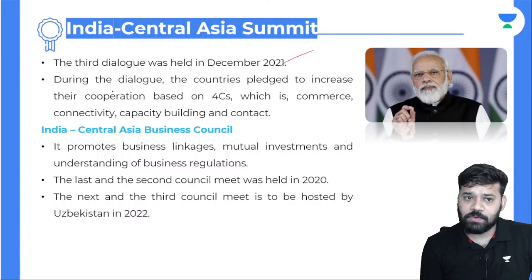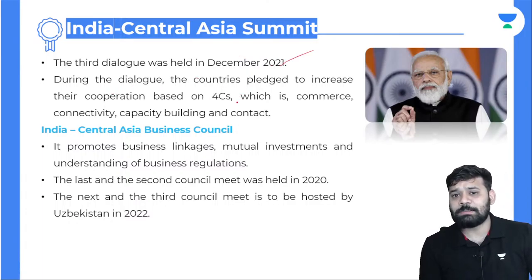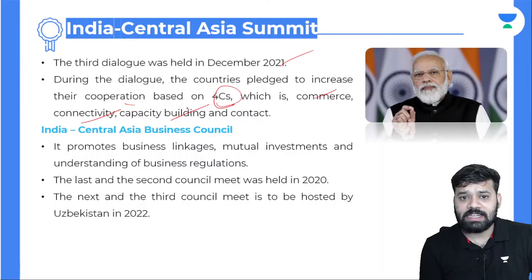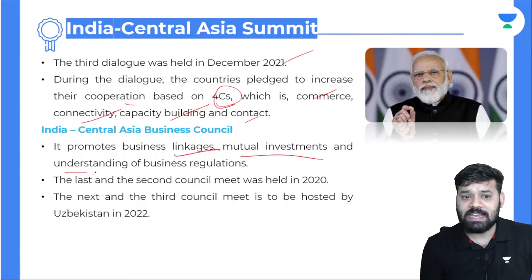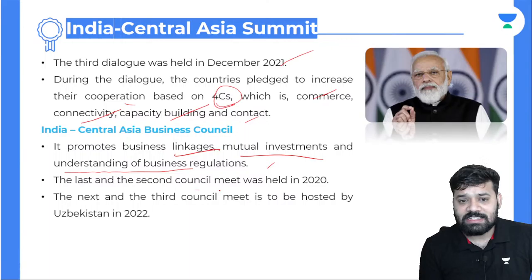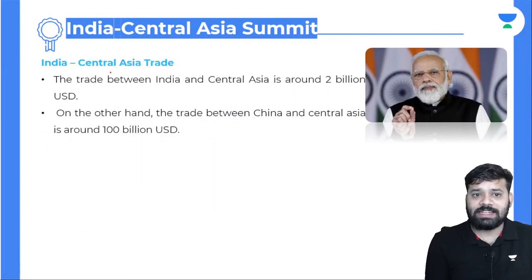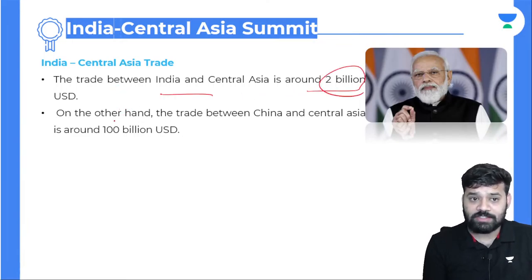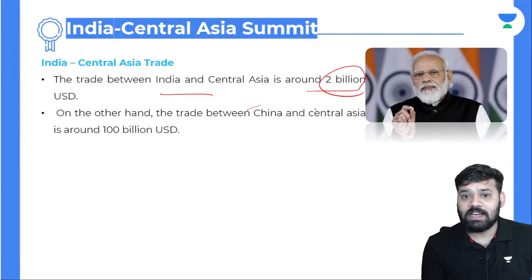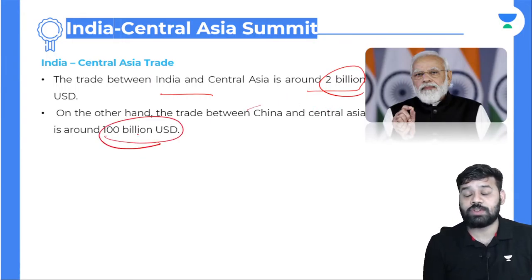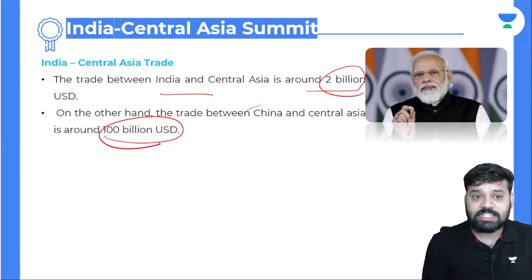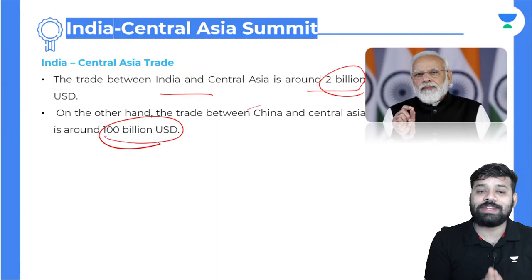The third dialogue was held in December 2021. During the dialogue, countries pledged to increase cooperation on four C's: Commerce, Connectivity, Capacity Building, and Contact. The India-Central Asia Business Council promotes business linkages, mutual investment, and understanding of business regulations. India-Central Asia trade is around 2 billion US dollars, whereas trade between China and Central Asia is around 100 billion US dollars — showing India needs to build stronger trade relations with Central Asian countries.